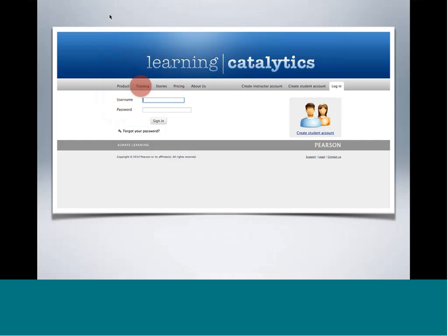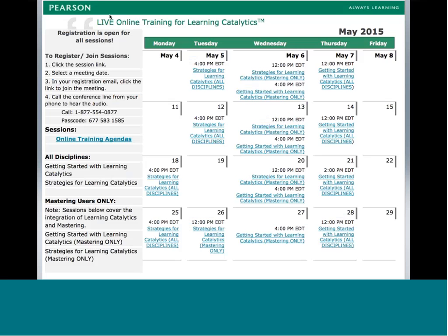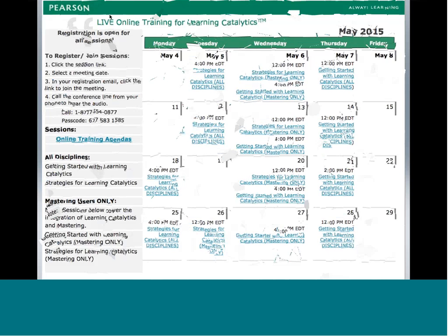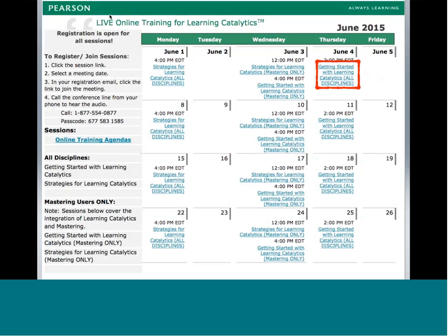You've probably found me today through the link on the main Learning Catalytics website. In the menu you'll find a link for training. When you click that link, you'll find several options including some how-do-I videos and an implementation guide. The highlighted option is online training, where you can sign up for a workshop like the one you're watching right now. What we're looking at is the introductory session — it used to be called Getting Started, now it's called Introduction to Learning Catalytics. This all-disciplines session works whether you're using Mastering, MyLab, or standalone Learning Catalytics with no ties to any other Pearson product.